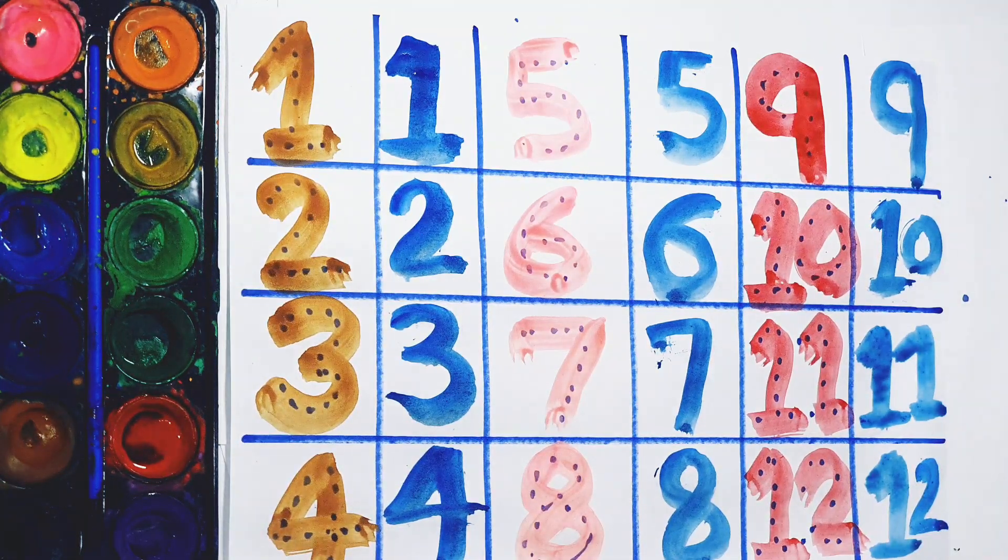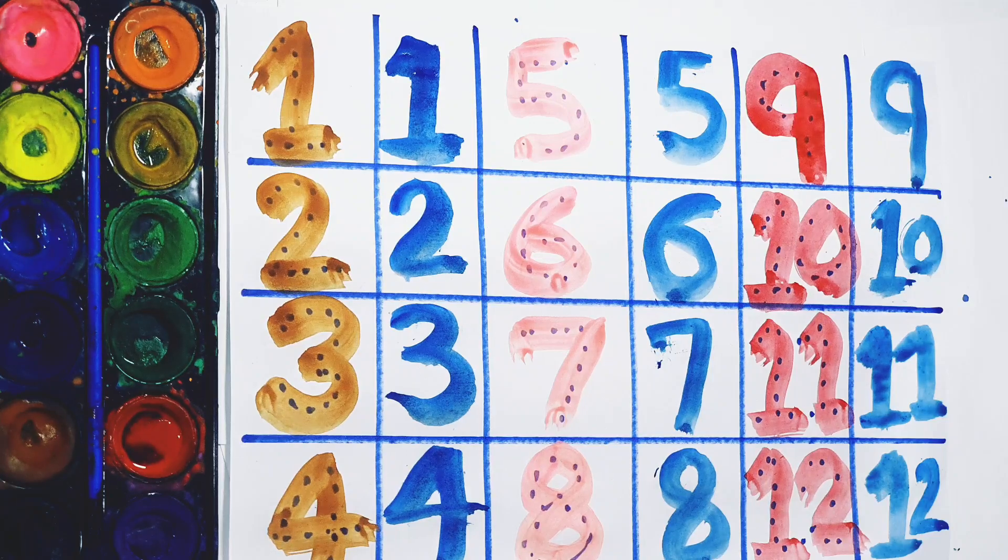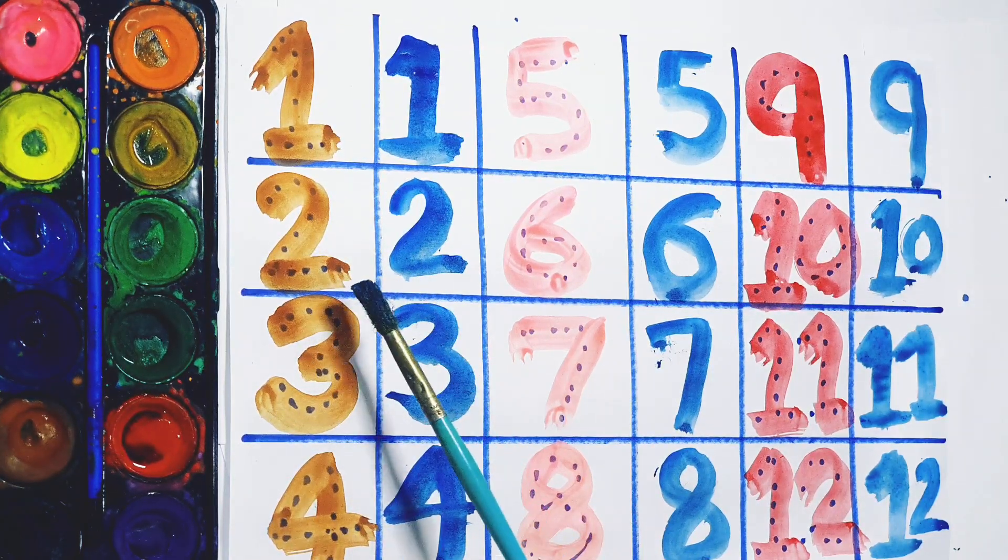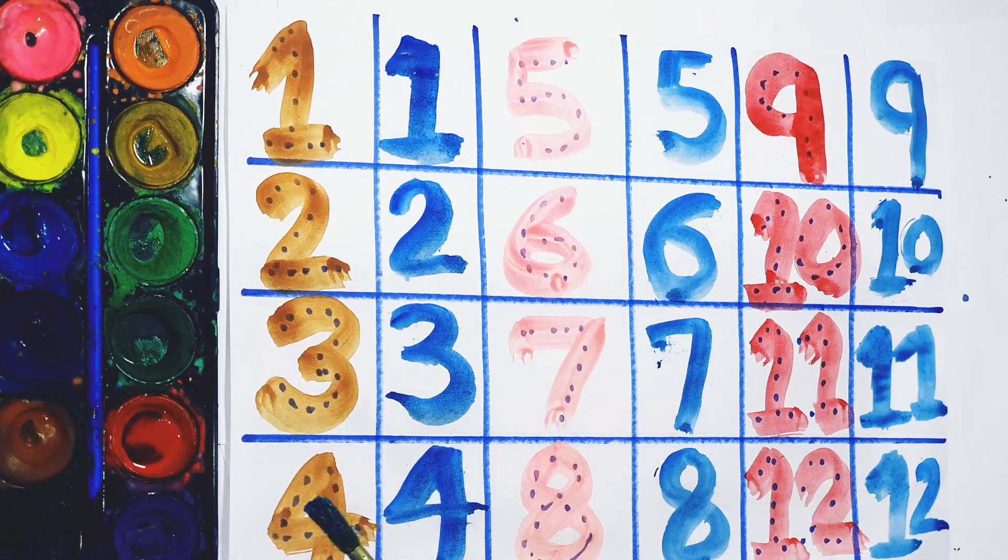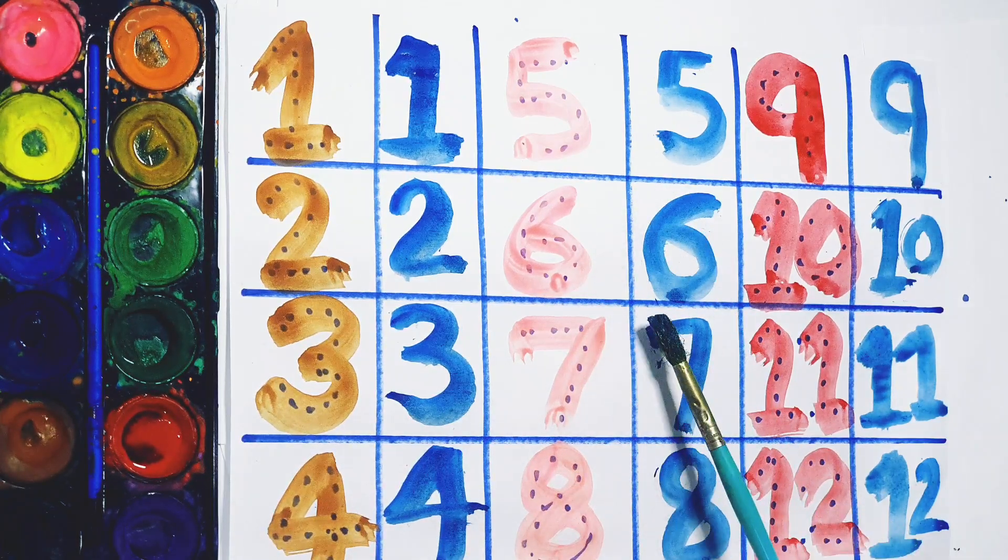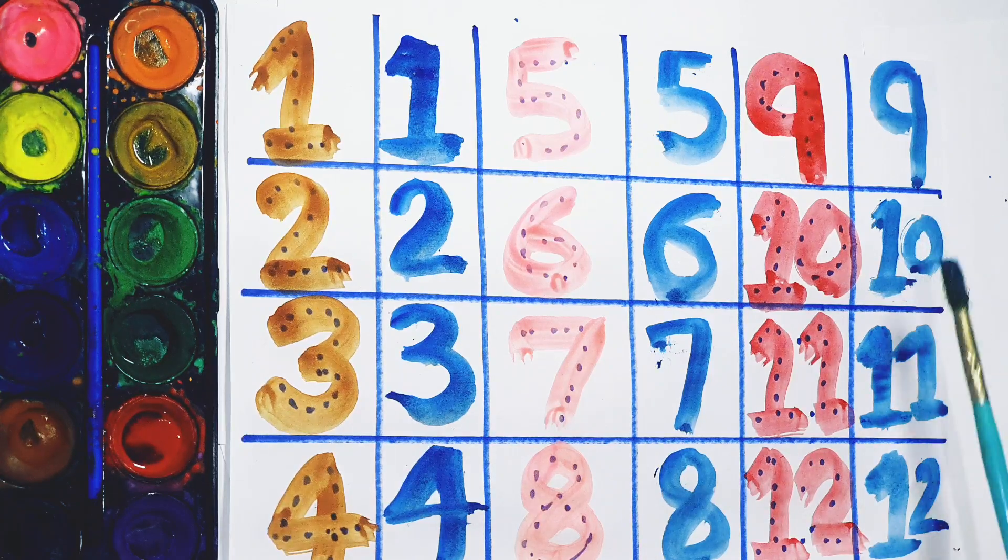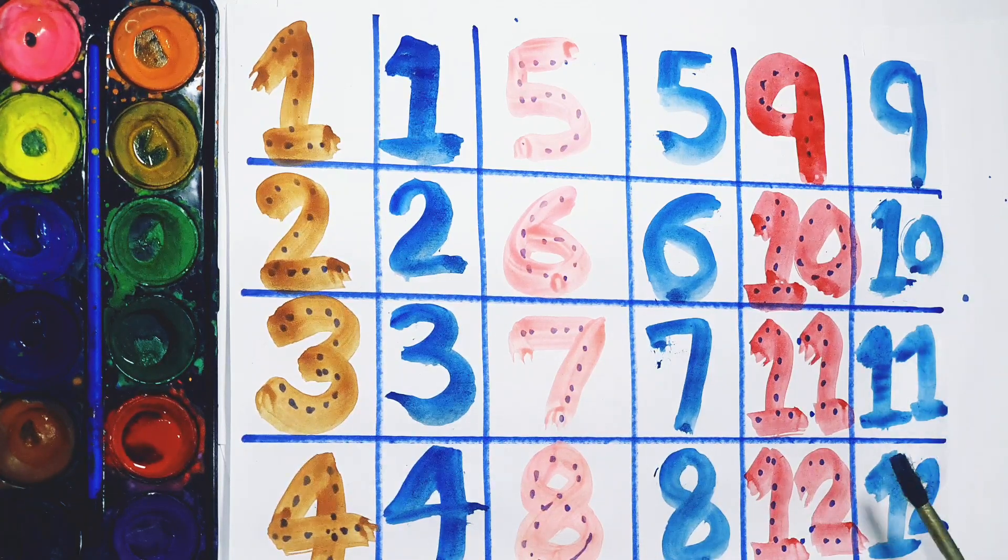So kids, what did we learn today? We learned one, two, three, four, five, six, seven, eight, nine, ten, eleven, twelve.